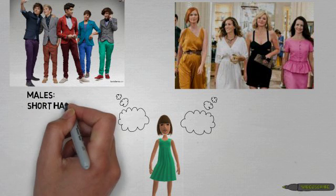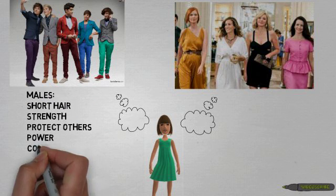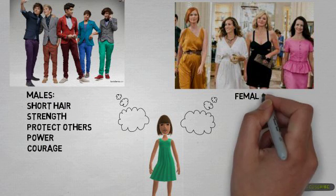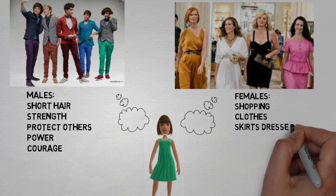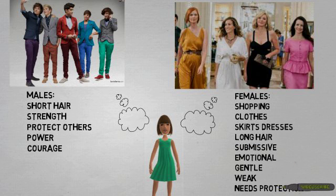Someone with a strong gender schema will impulsively categorize new information in relation to gender, as opposed to any other notion, such as ethnicity or age. In effect, they will sort people, characteristics, and behaviors into masculine and feminine categories.